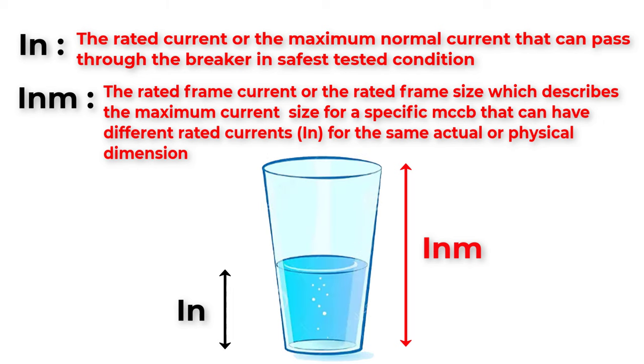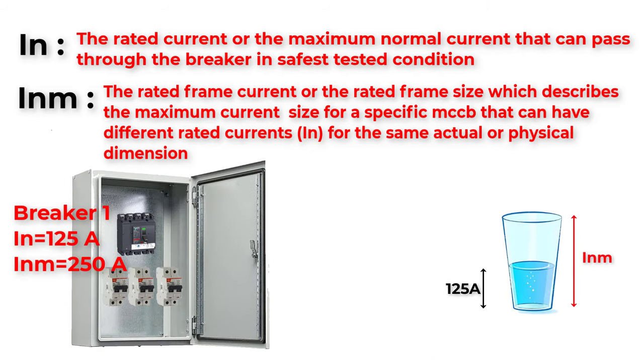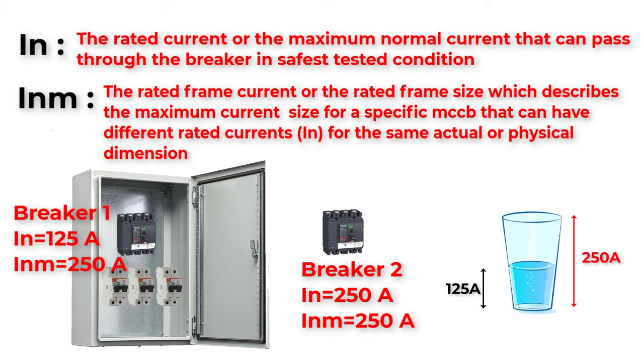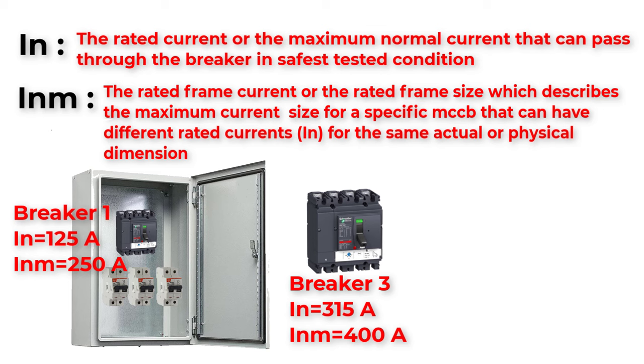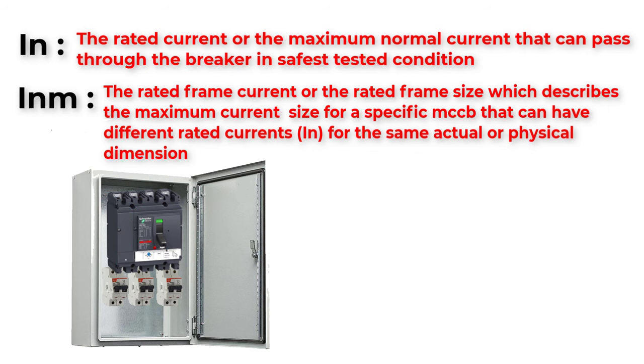So for example, if we have a breaker with rated current In equal to 125A and a frame size of 250A. Now, if we decide to upgrade our breaker to another breaker of higher rated current In equal to 250A, with the same frame size 250A, both breakers will have the same physical size. So we can replace breaker 2 with breaker 1 in the panel without any problems. But if we decide to bring breaker 3 with a rated current of 315A and a frame rated current 400A, now the frame size is different. Then breaker 3 is bigger in size and could not fit inside the panel.